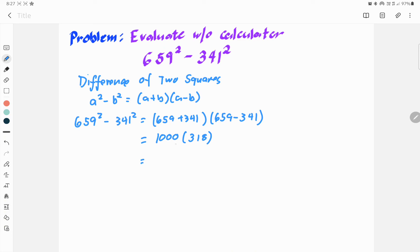When you multiply that, the final answer would be 318,000. So, that's how you're going to evaluate it if you know the concept of difference of two squares.